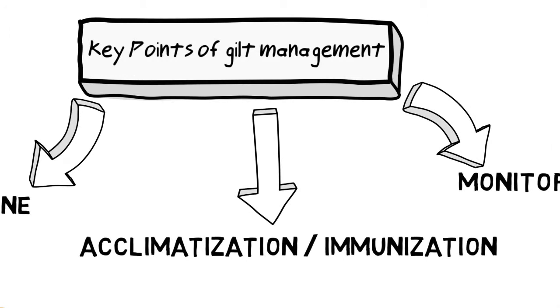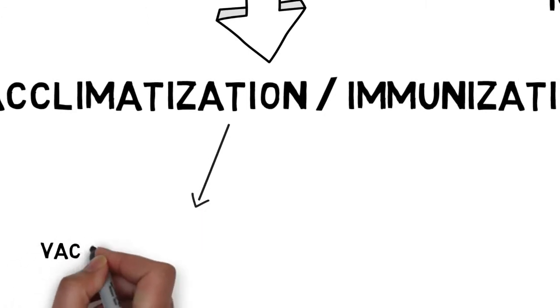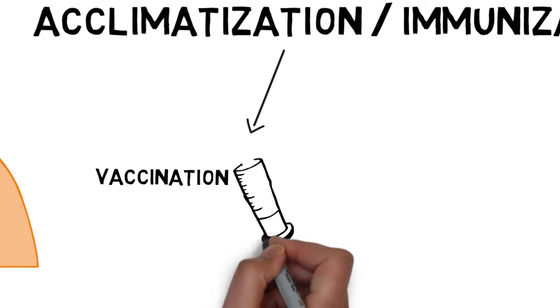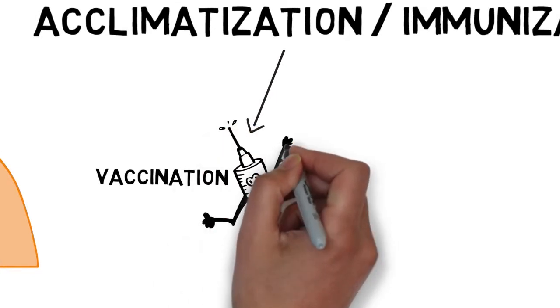Focusing on the acclimatization process, there are two different and widely used strategies. On the one hand, we can use PERS modified live virus vaccines. The vaccination protocol is usually two doses before the first insemination, both of them separated by three or four weeks, although some vaccines have demonstrated efficacy with a single dose prior to mating.